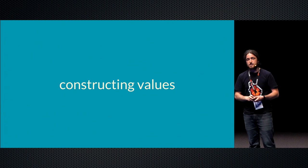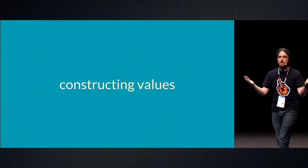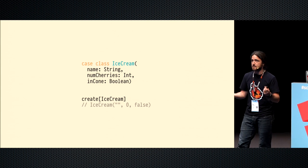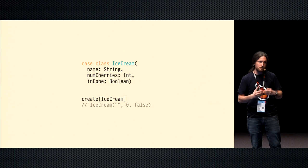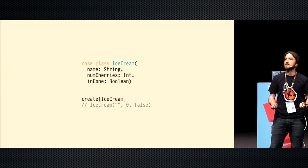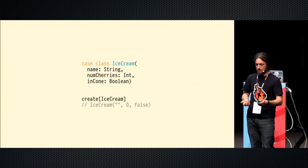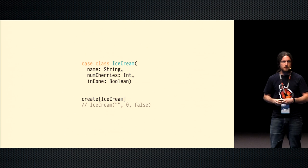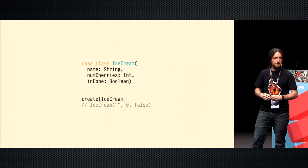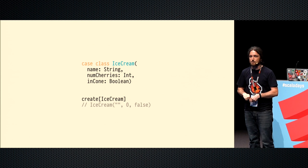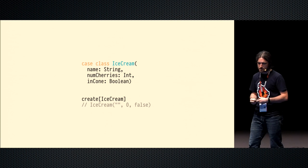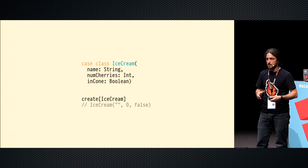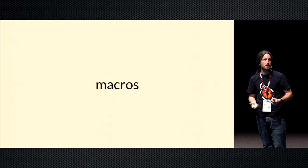Here is our case study. We have a simple case class, something very regular we might all write in our code. We want to be able to create values of it, but we are lazy. We want to build the case class without actually specifying all the parameters of the constructor. We can do this by making default values on the arguments, but we want to do it with some fancy programming techniques to justify our Scala salaries. So we're going to write a macro or Shapeless code to do it — we write `create` and give it a type, and it builds a value of that type. Let's start off by looking at how we might do this with a macro.